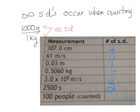100 people — the answer is infinite, because this is a count. There's an infinite number of significant digits because 100 people were counted, not measured.